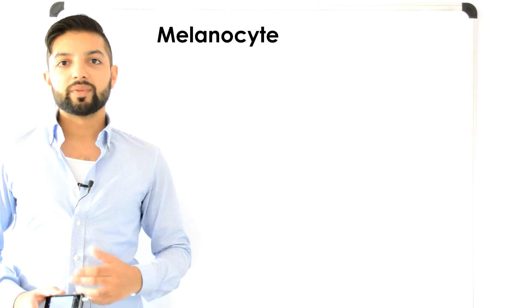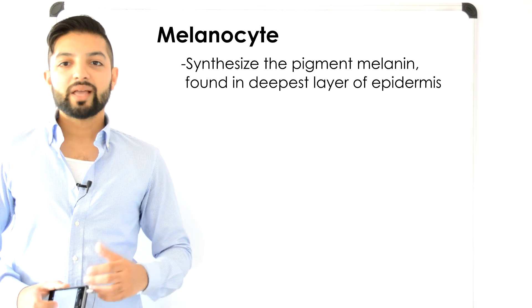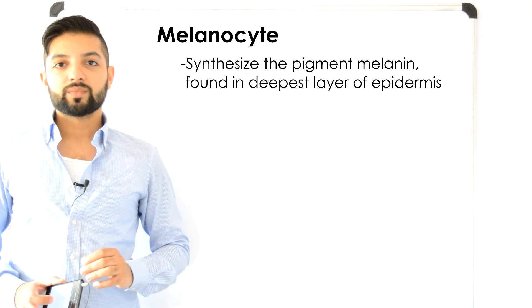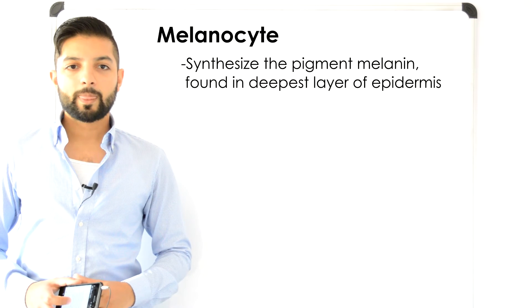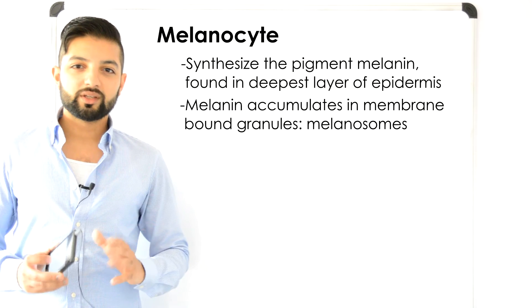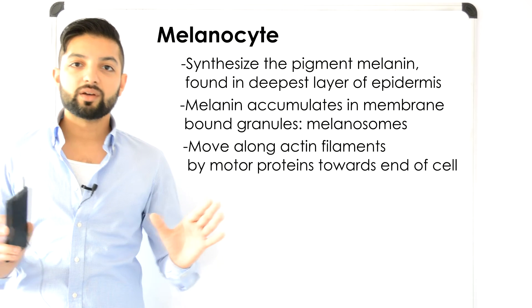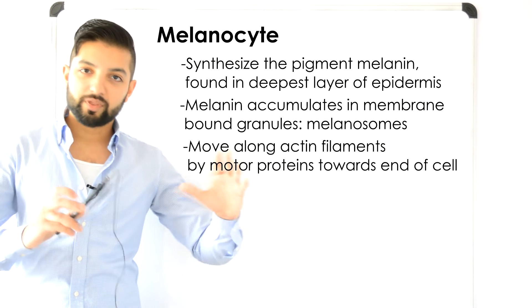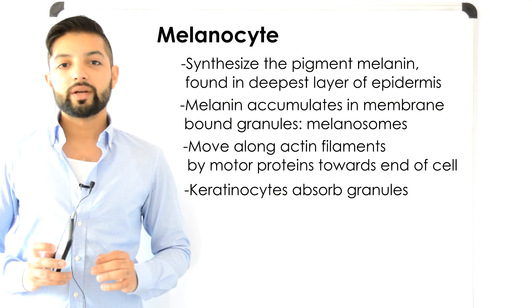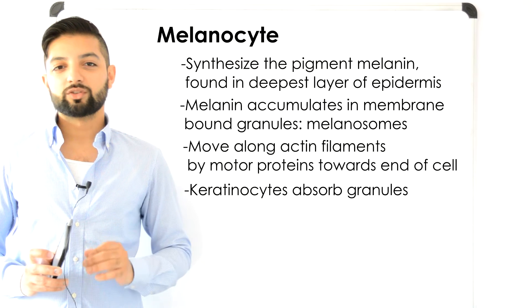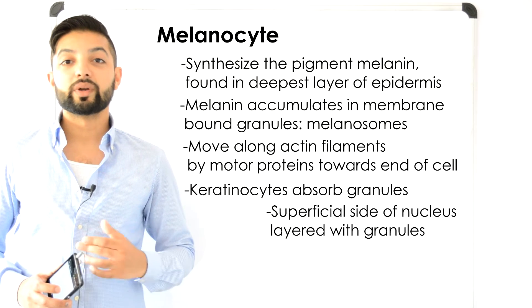The next type of cell is the melanocyte. Melanocytes are spider-shaped epithelial cells which synthesize a pigment called melanin. As melanin is produced it accumulates in membrane-bound granules called melanosomes. They move along actin filaments by motor proteins towards the ends of the melanocyte's processes — the spider-like arms. From there the granules are taken up by nearby keratinocytes, and these melanin granules accumulate on the superficial or sunny-side surface of the keratinocyte's nucleus. This forms a pigment shield that protects the nucleus from the damaging effects of ultraviolet radiation in sunlight.